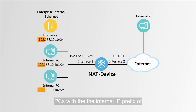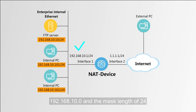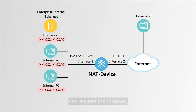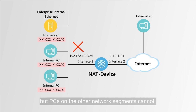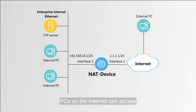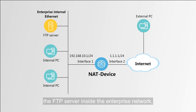The enterprise is assigned five public IP addresses. After the configuration, PCs with the internal IP prefix of 192.168.10.0 and mask length of 24 can access the internet, but PCs on other network segments cannot. PCs on the internet can access the FTP server inside the enterprise network.